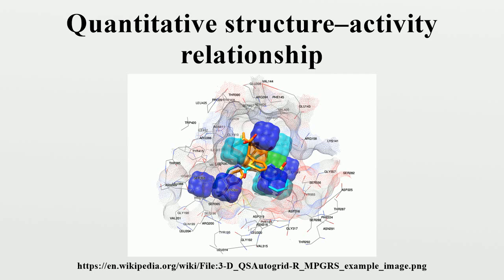Related terms include quantitative structure-property relationships, when a chemical property is modeled as the response variable. As an example, biological activity can be expressed quantitatively as the concentration of a substance required to give a certain biological response. Additionally, when physico-chemical properties or structures are expressed by numbers, one can find a mathematical relationship, or quantitative structure-activity relationship, between the two.